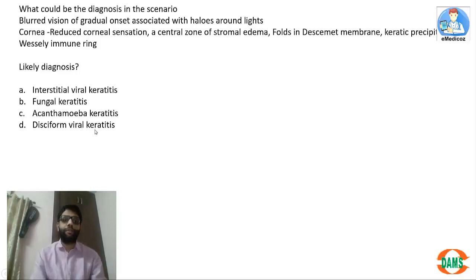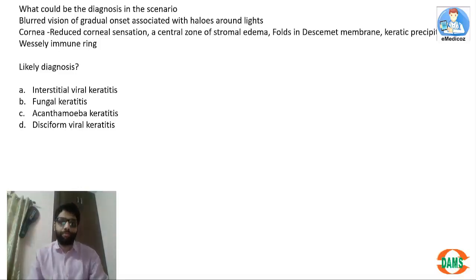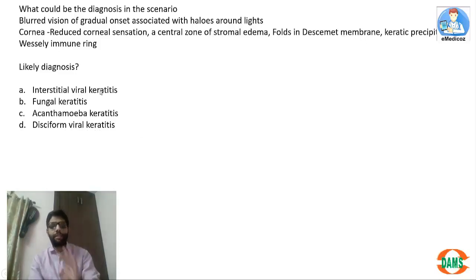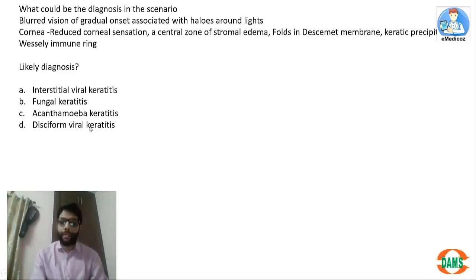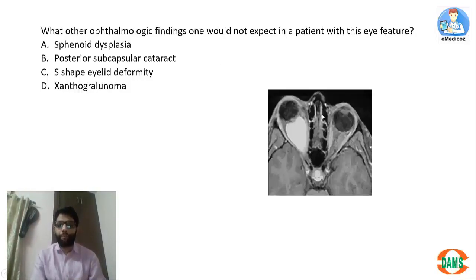The answer is disciform viral keratitis, affecting the endothelium layer of the cornea. Whenever the endothelium is compromised, the patient can have corneal edema, and with corneal edema there can be colored halos and Descemet folds. Keratic precipitates represent a type 4 hypersensitivity reaction. Interstitial keratitis affects the stroma and is a type 3 hypersensitivity reaction against the viral antigen.